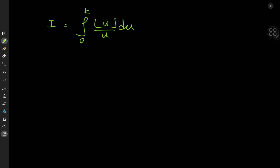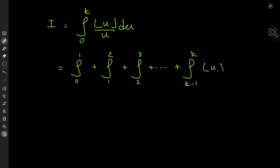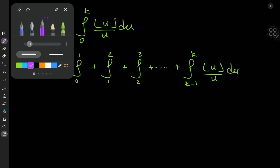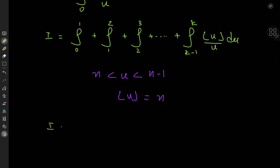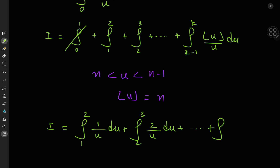Let's break down the integral from 0 to k to make use of the properties of the floor function. The integral from 0 to k can be written as the integral from 0 to 1, plus the integral from 1 to 2, plus the integral from 2 to 3, and so on, plus the integral from k minus 1 to k, of floor(u) over u, du.